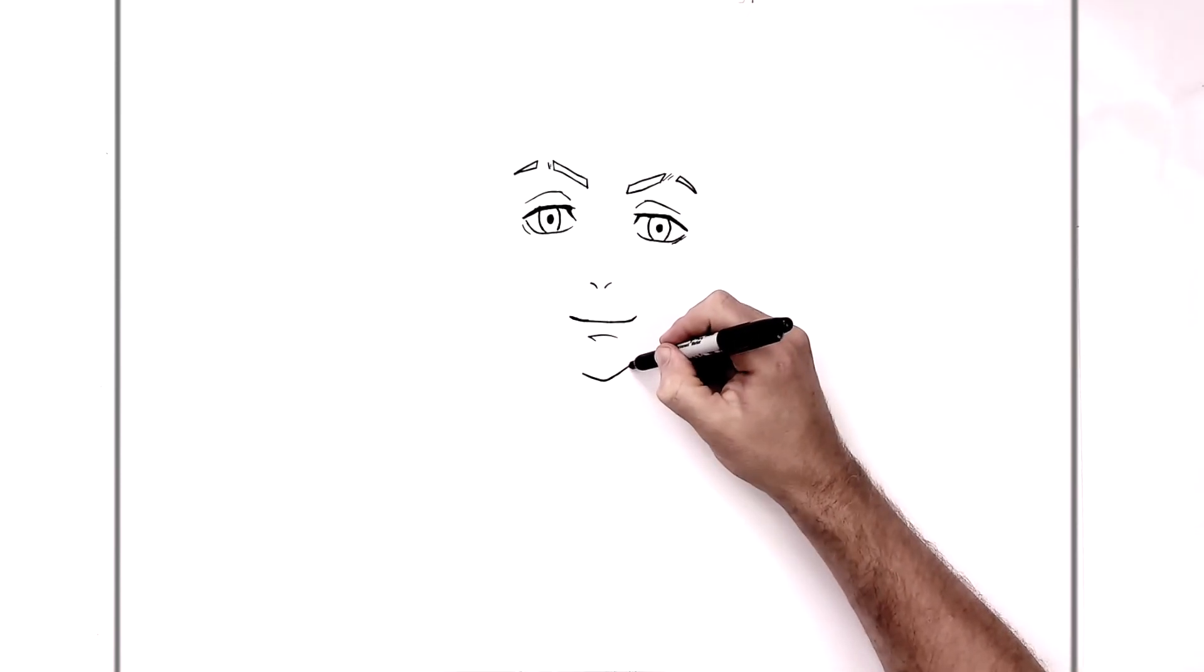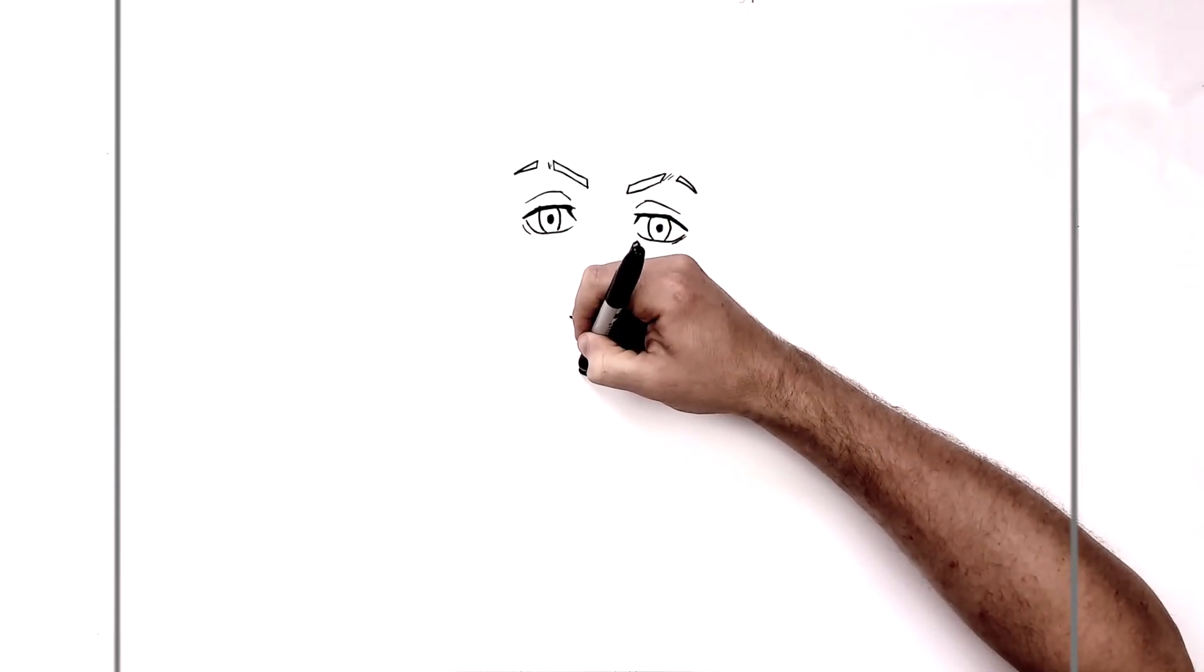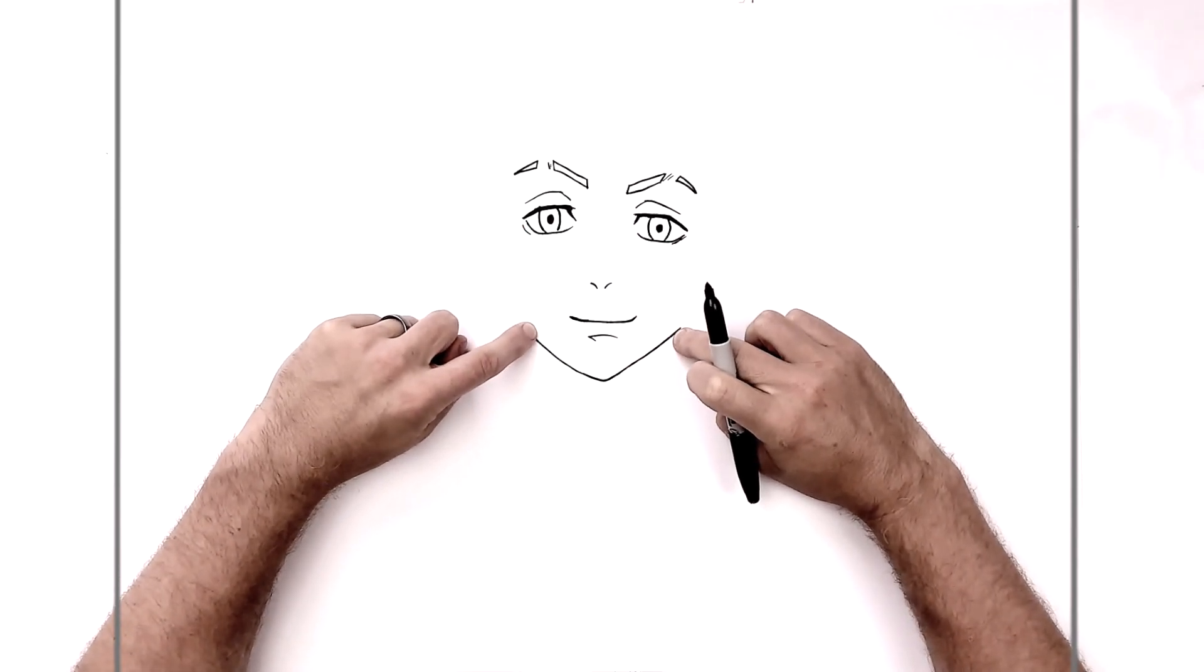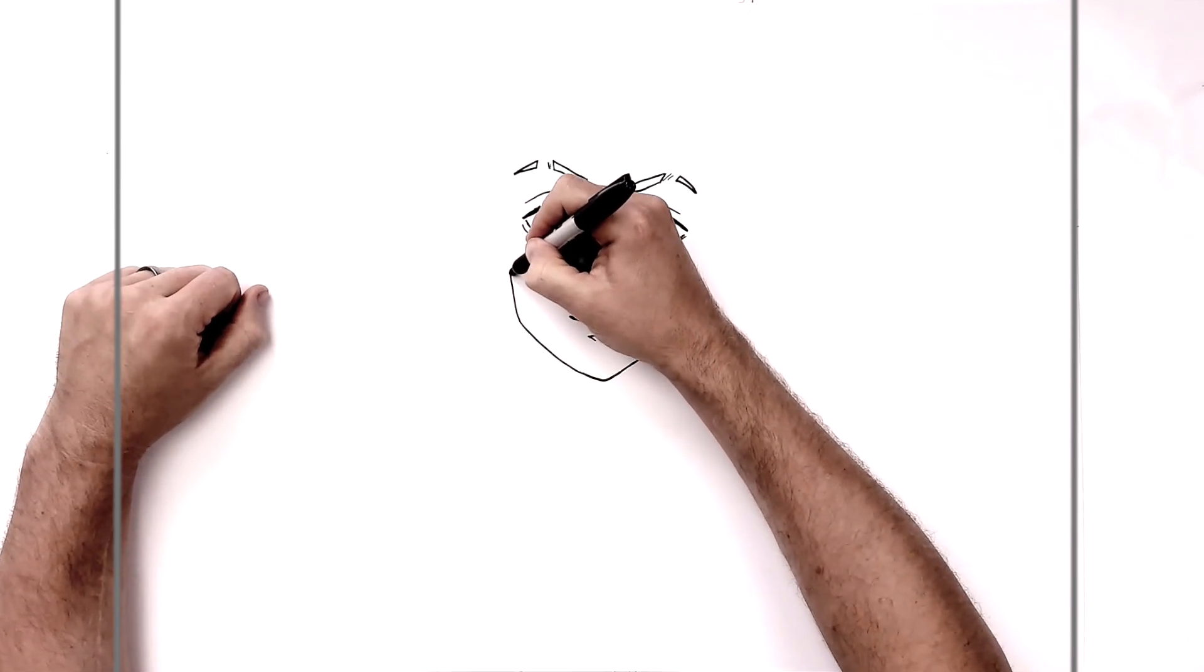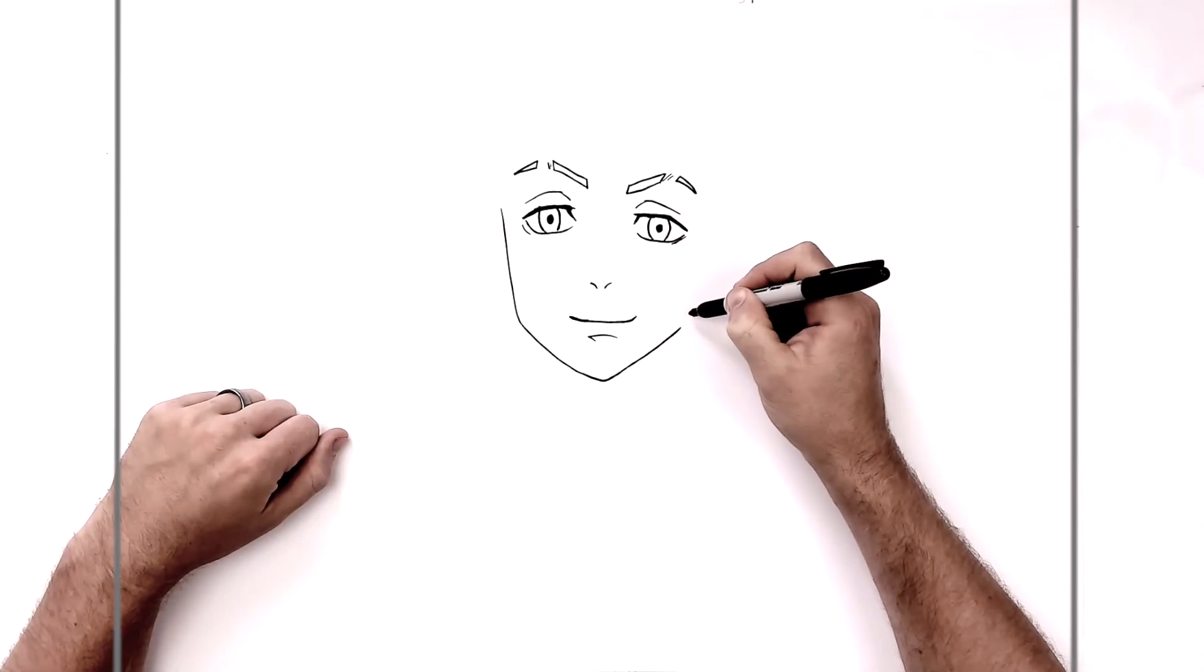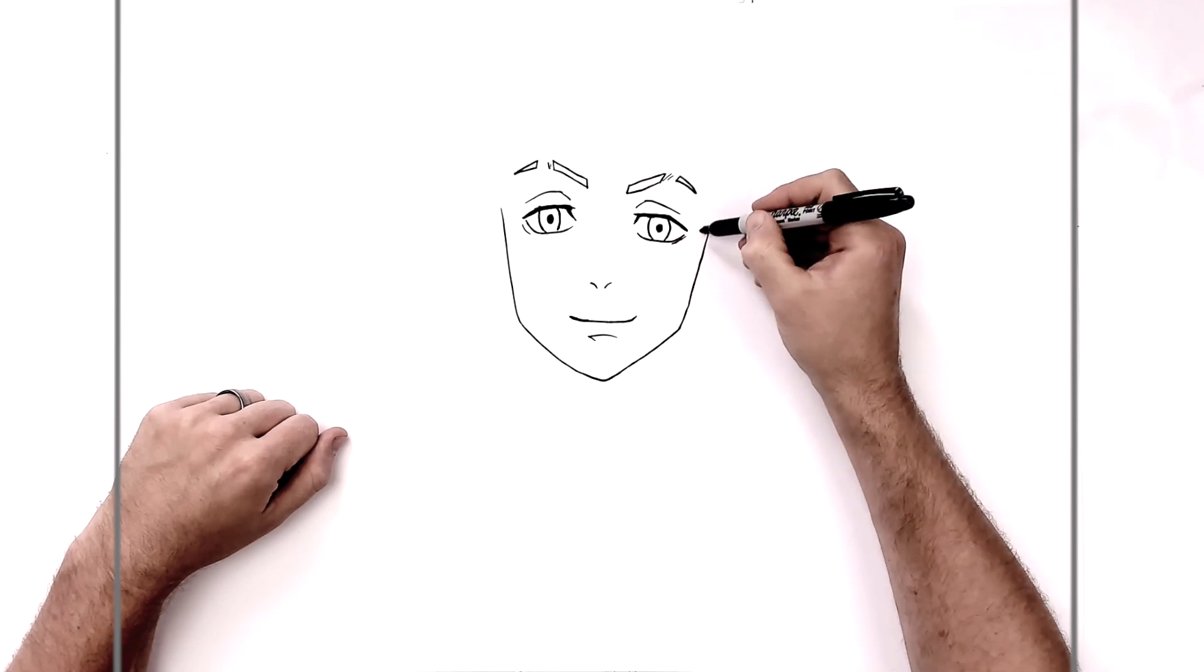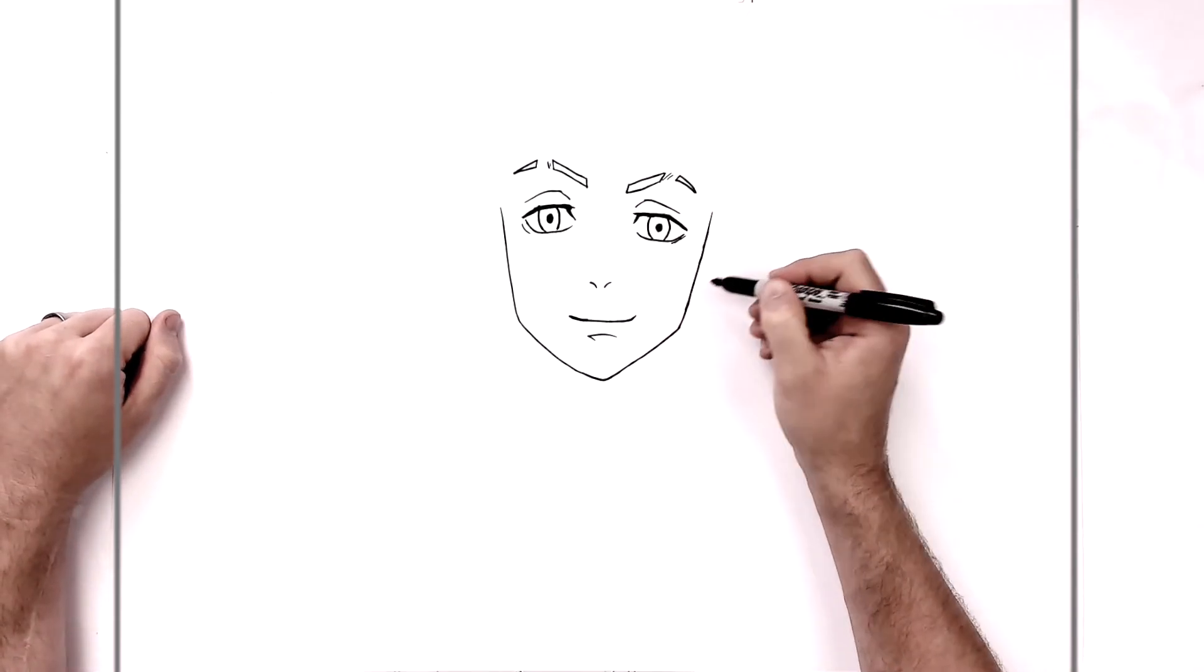And then we can do the jaw. So we'll bring it up the side, up to there. And then the other side, up like so. He's stopping just underneath the corners of his eye. And then across some sort of the mouth area there. Then we'll go up, up like so, and up to the other side.